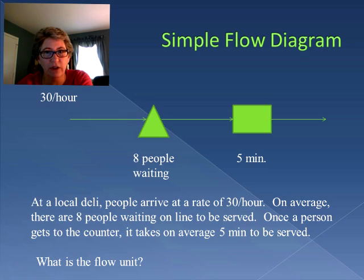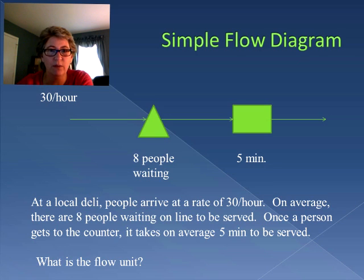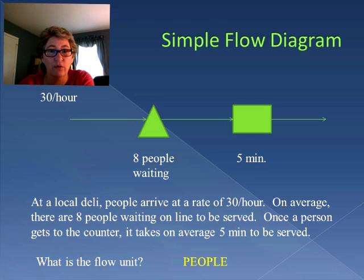We're also going to look at this as a stable process, which means the input rate is going to equal our output rate — 30 people coming in per hour, 30 people per hour are leaving. The first thing we want to double-check is: what is our flow unit? If you said people, you would be correct. The flow unit is what we are studying as part of the process, and you can see we're referring to people in the buffer and as part of the throughput rate.